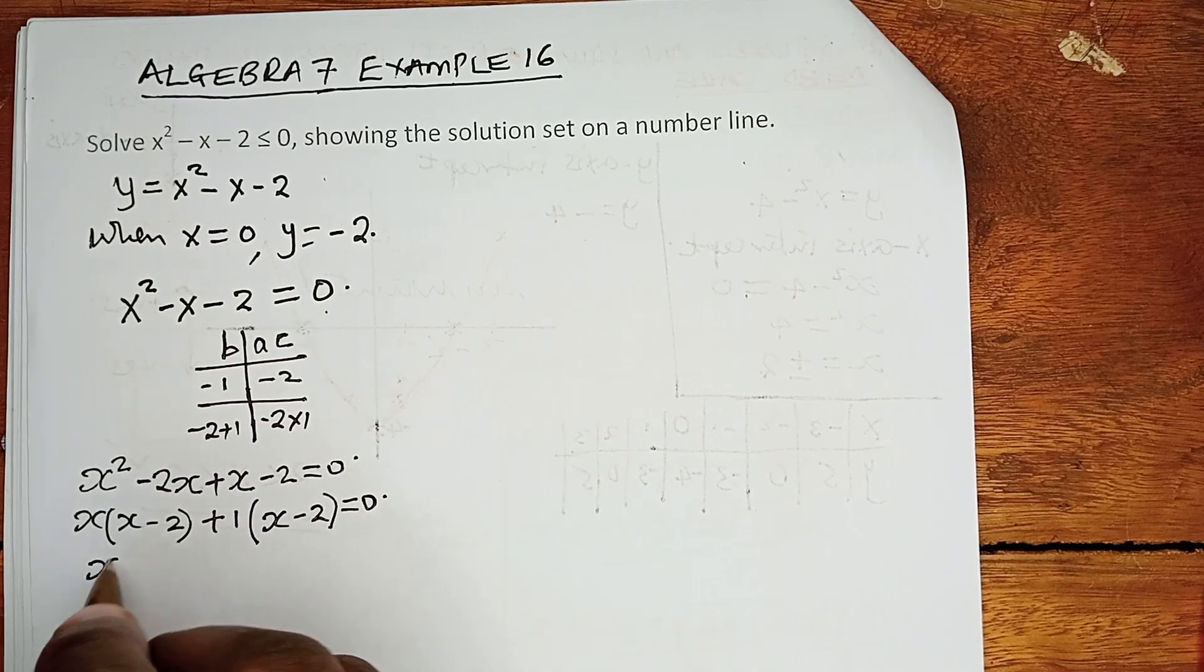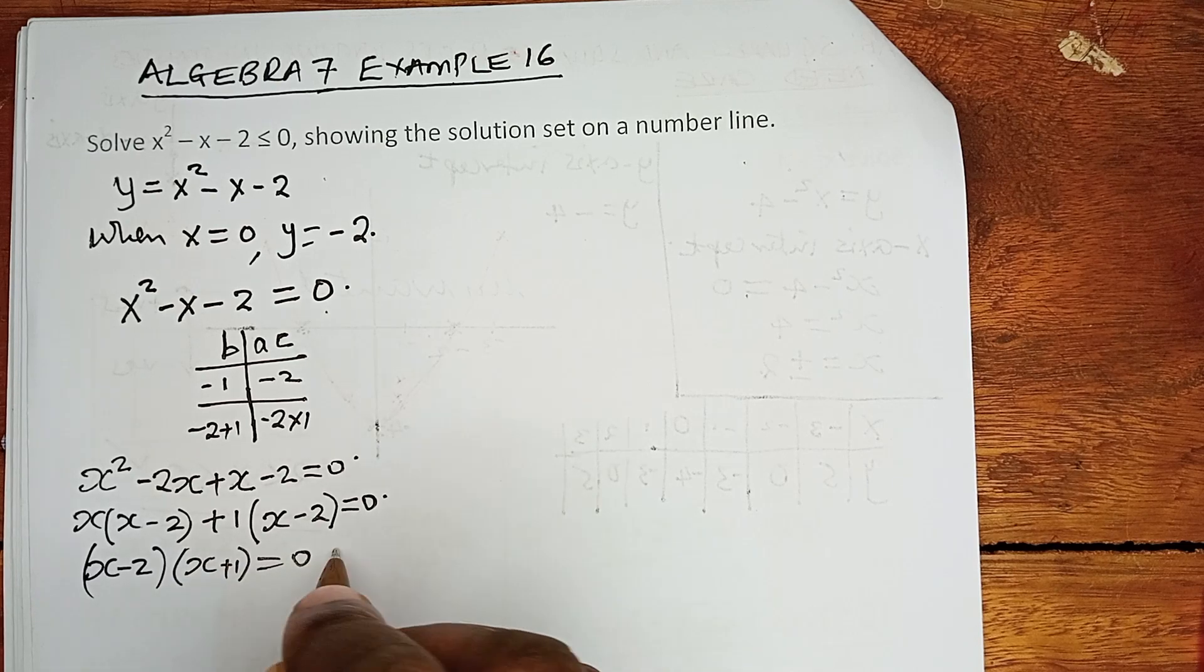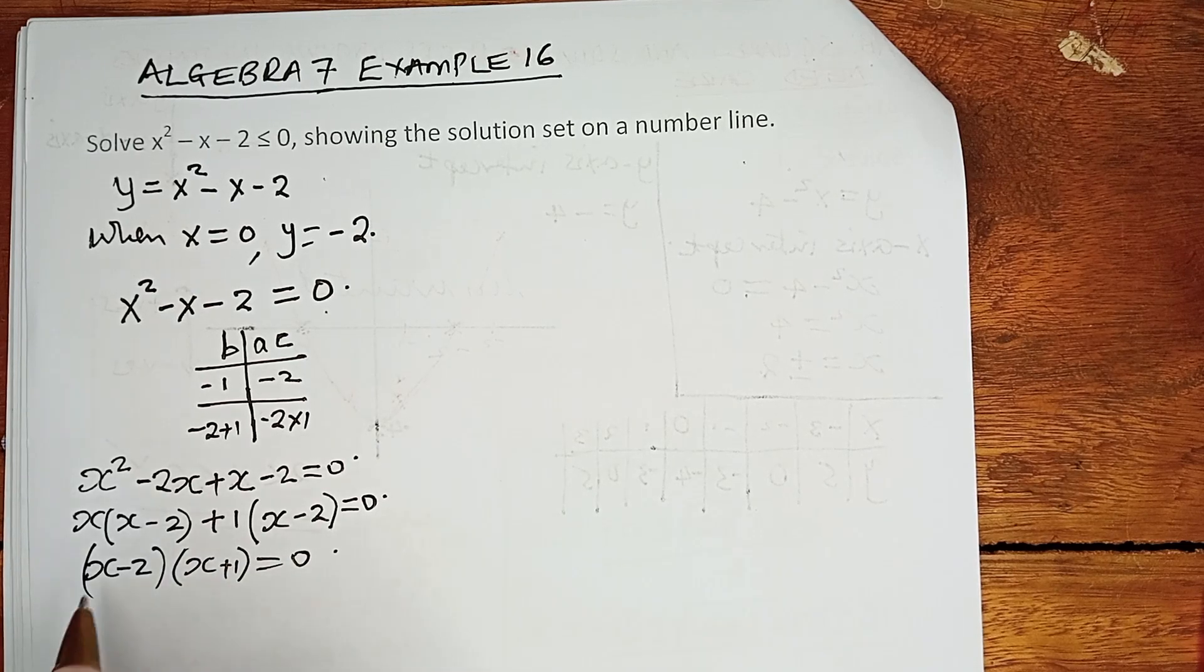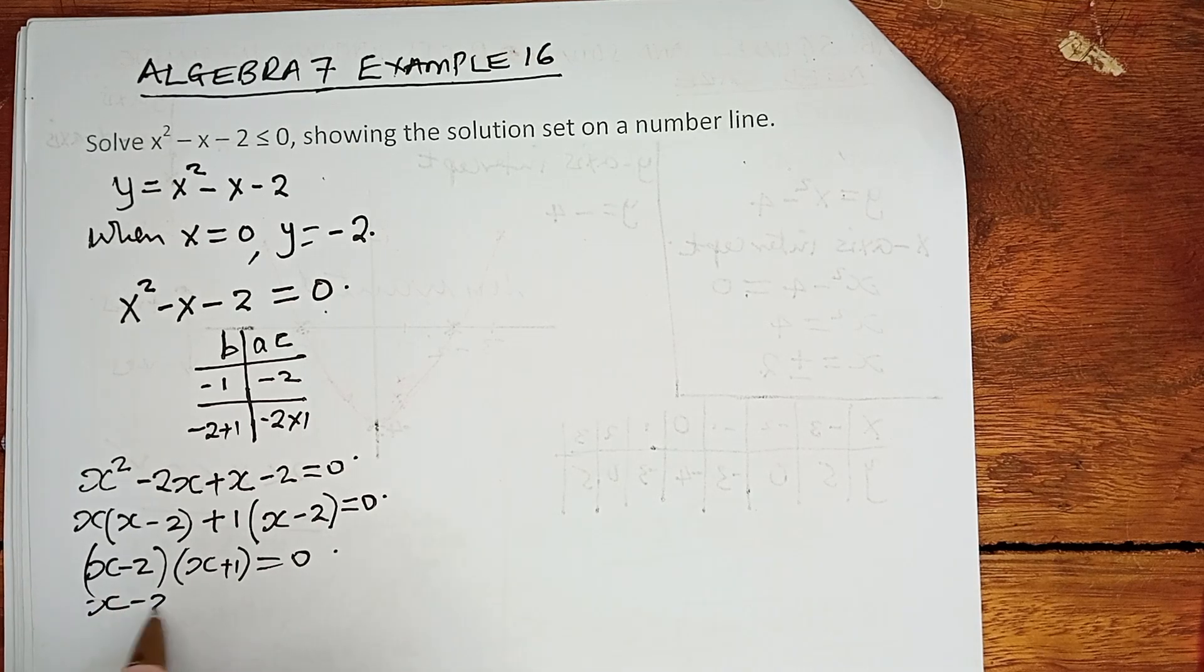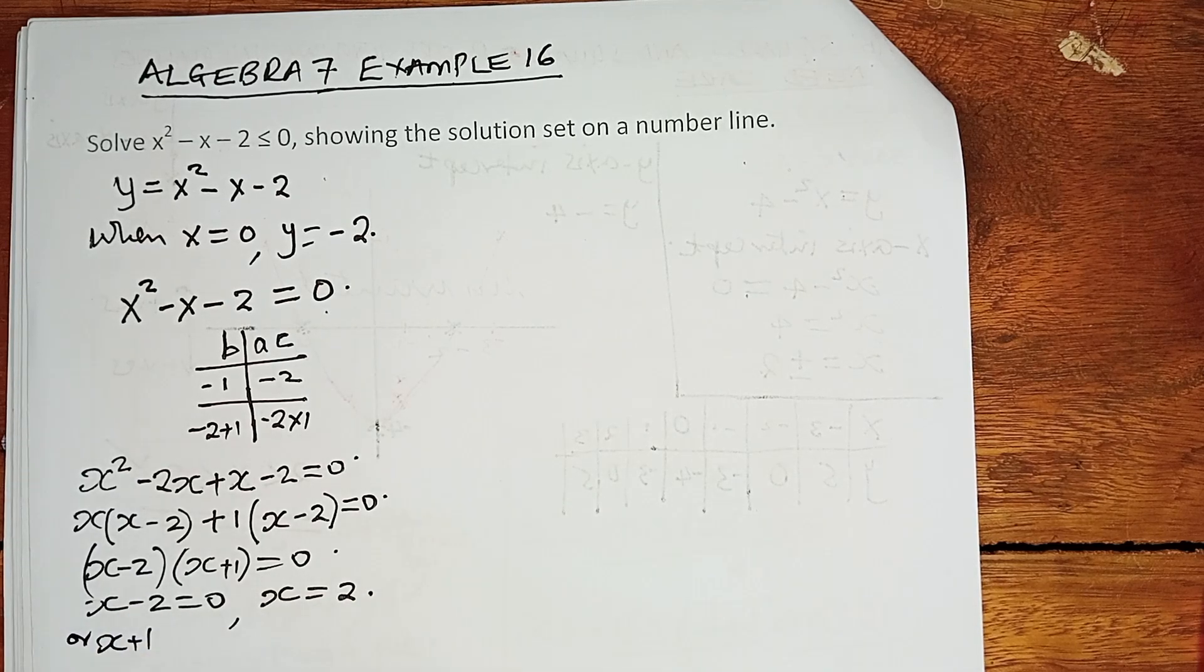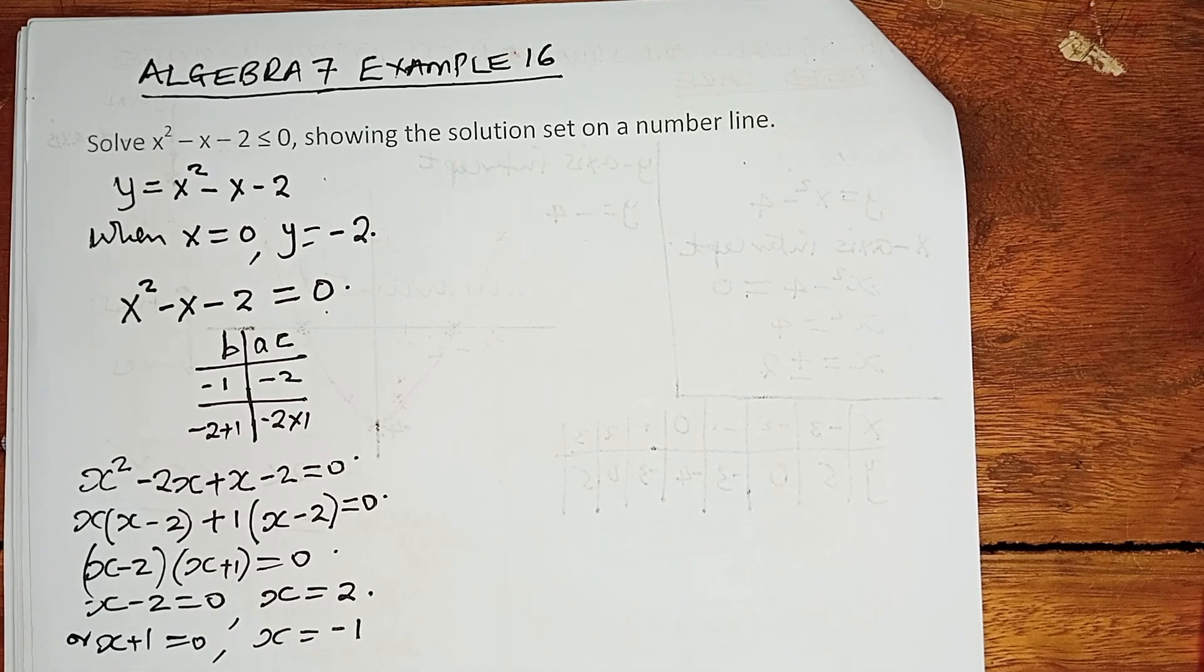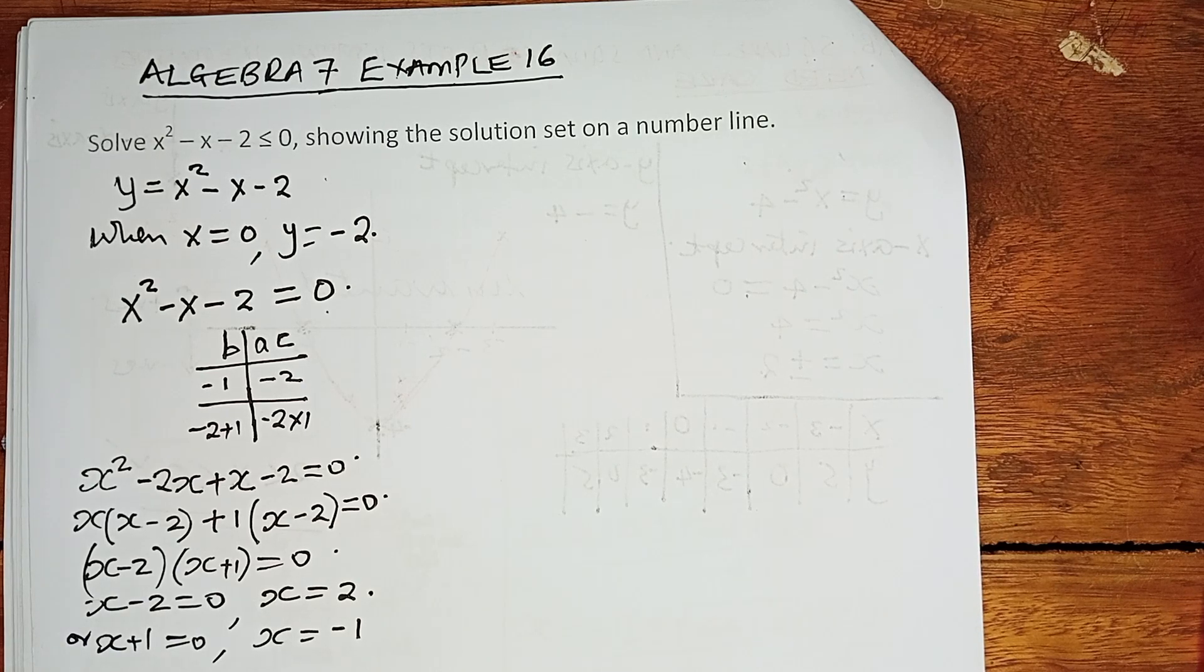So in this case, we have x minus 2 and x plus 1 equals 0. If x minus 2 is the one which is 0, then x equals 2. Or if x plus 1 is the one which equals 0, then x equals negative 1. These are what we are calling the x-axis intercept or the critical values.